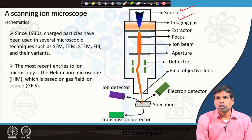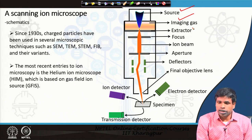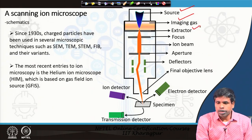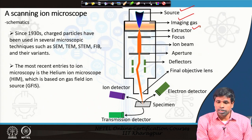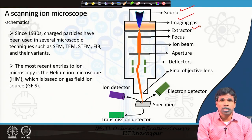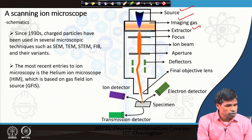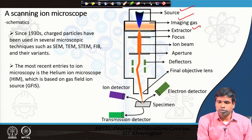The imaging gas is ionized and ions are formed. An extractor extracts the ions from the tip to create a virtual image of that spot. Then we have several types of lenses. In the electron microscope we used electromagnetic lenses, but in the helium ion microscope we do not use any electromagnetic lenses. All lenses in the helium ion microscope are electrostatic lenses, because ions are weakly affected by magnetic fields.